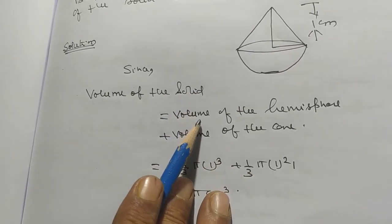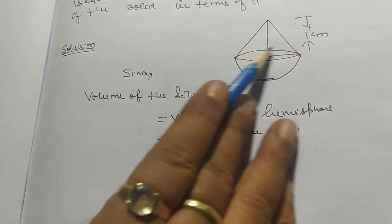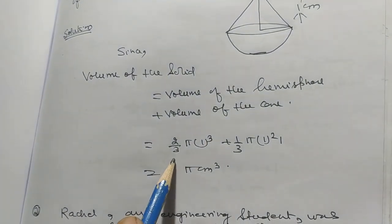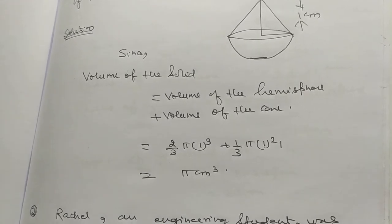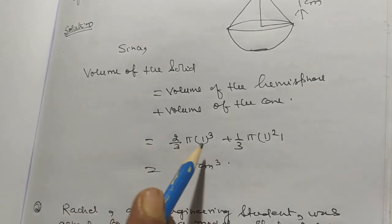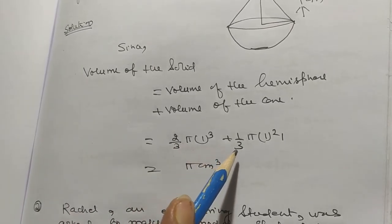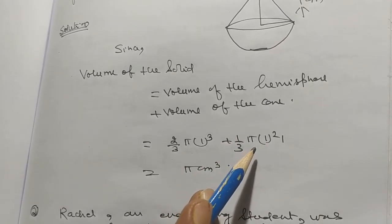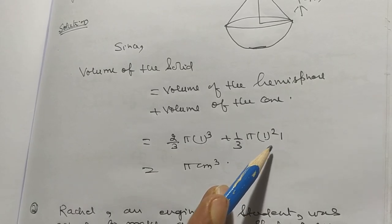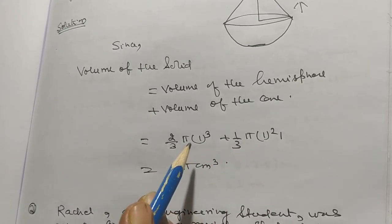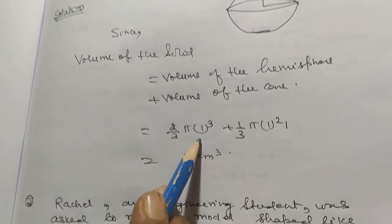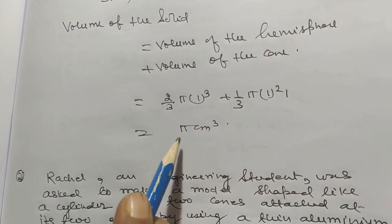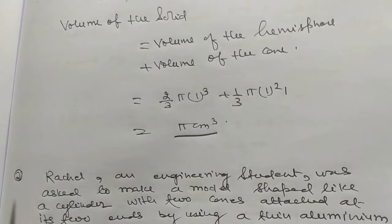Volume of the solid is equal to volume of hemisphere plus volume of cone. So, two by three pi r cube plus one by three pi r square h, where h is the height of the cone and two by three pi r cube is the volume of the hemisphere. After solving, it will be pi centimeter cube.